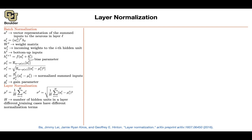Different training cases have their own independent normalization term. Every single data point gets its own statistic: if an image goes in, the statistic depends on that particular image; if a text goes in, it's the statistics of that sentence. And you have no constraint on the size of a mini-batch — it could be as large or as small as you want, even as small as one.